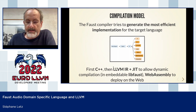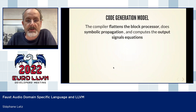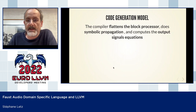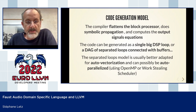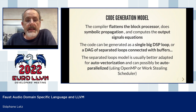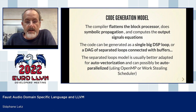The code generation model: the compiler has different ways to output code — different shapes of the produced code. It performs symbolic propagation going from the block diagram to the signal, and from the internal representation it can produce either a single big DSP loop or a DAG of separated loops connected with buffers. This second representation is more suitable when using a C++ or LLVM compiler capable of auto-vectorization, allowing us to generate SIMD code. From the DAG representation, we can also do auto-parallelization by detecting parts that can run in parallel.